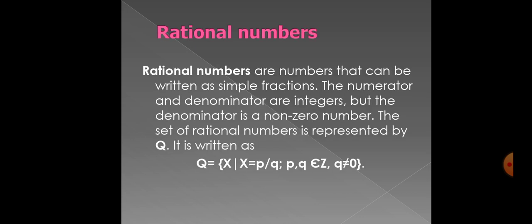So next, we have rational numbers. Rational numbers are numbers that can be written as simple fractions. The numerator and denominator are integers. But the denominator is a non-zero number. The set of rational numbers is represented by Q. It is written as Q equal to calibrator start X such that X equal to p over q, p q belong to Z, q not equal to zero, calibrator close.